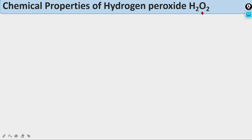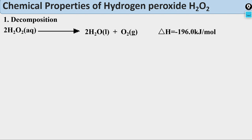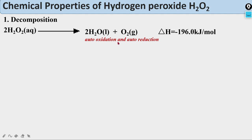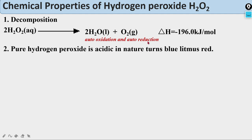Chemical properties of H₂O₂: First, decomposition — H₂O₂ in aqueous solution easily decomposes into water and oxygen. The enthalpy change is −196.0 kJ/mol. This is auto-oxidation and auto-reduction: in H₂O₂ the oxidation number of oxygen is −1; in O₂ it becomes 0 (oxidation), and in H₂O it becomes −2 (reduction). Second, pure hydrogen peroxide is acidic in nature and turns blue litmus red.